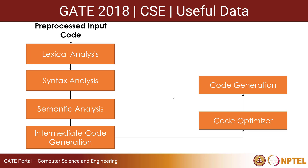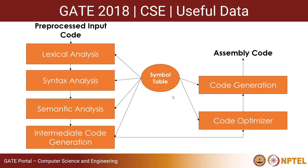So to recap: the preprocessed input code goes to lexical analysis, which generates a stream of tokens; then to syntax analysis, which generates a parse tree; then to semantic analysis, which generates a semantically verified parse tree; then to intermediate code generation; then the code optimizer performs machine independent and dependent optimizations; and finally the target code is generated using code generation. All these phases work together using a symbol table, which stores information about the symbols used in the program, and an error handler to handle errors.